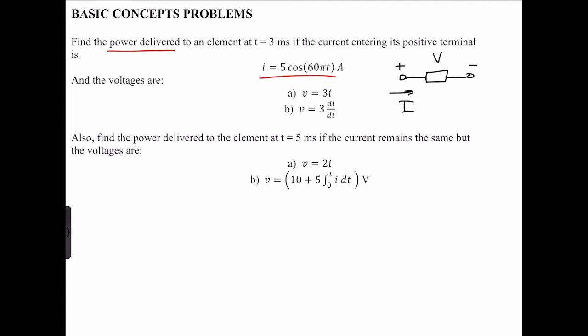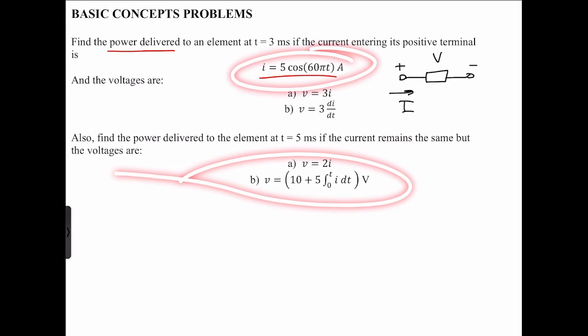Then find the power delivered to an element, which is still going to get that absorbed. But we have to think about this a little bit differently because the voltages involve integration, which might come out as negative because of the cosine integration. So the power delivered to the element at 5 milliseconds, if the current remains the same.